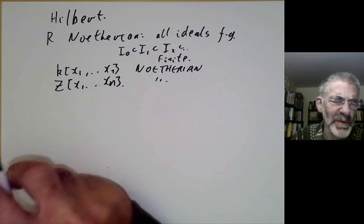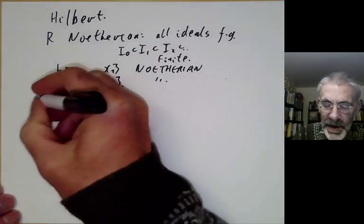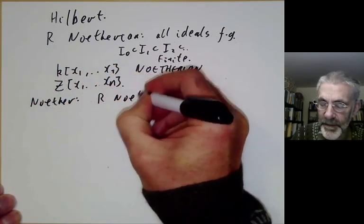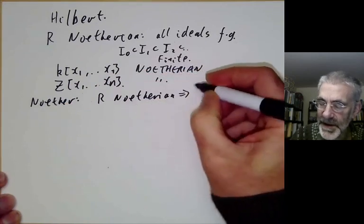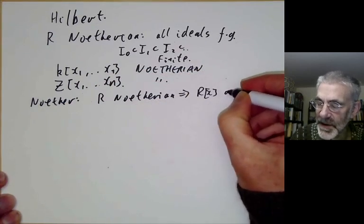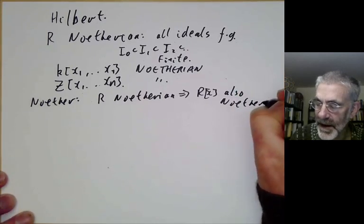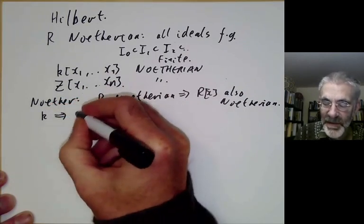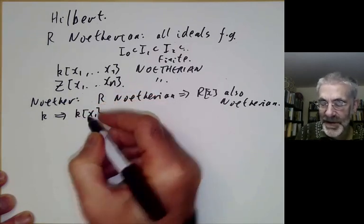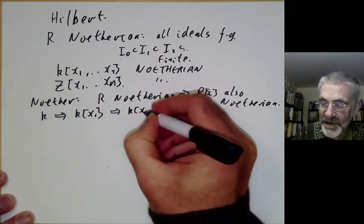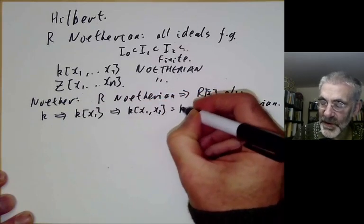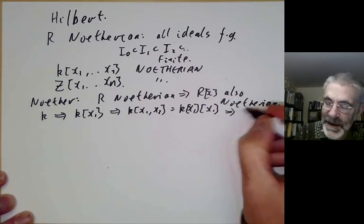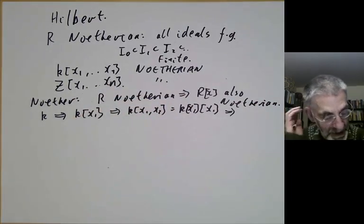Hilbert's original proofs were a little complicated. Noether found a much easier way of proving them, which was just to show that if R is Noetherian, this implies the ring of polynomials over R is also Noetherian. Hilbert's theorems follow immediately: K is Noetherian, so K[x] is Noetherian, then K[x,y] is Noetherian since it's a polynomial ring over K[x], and so on for all polynomial rings.